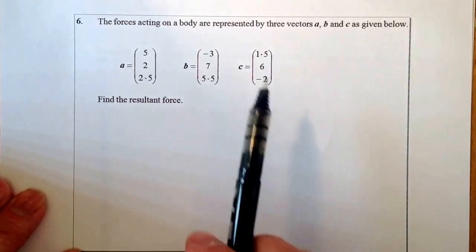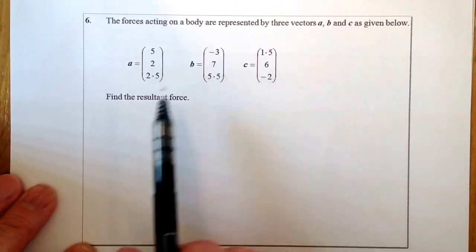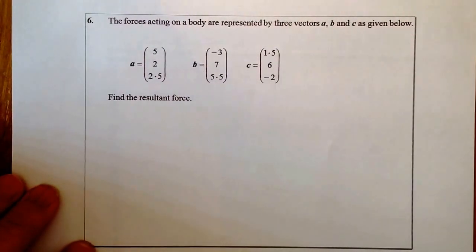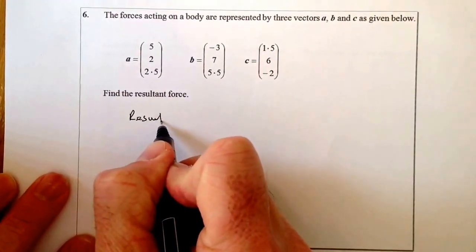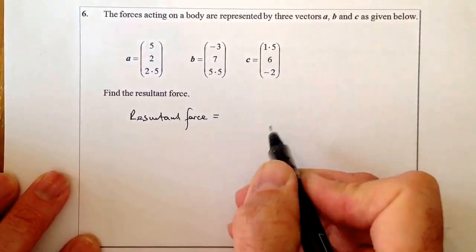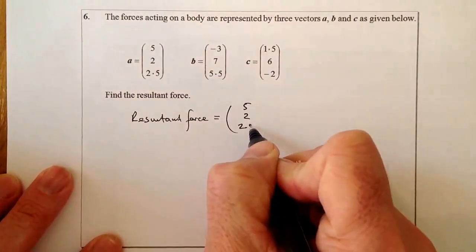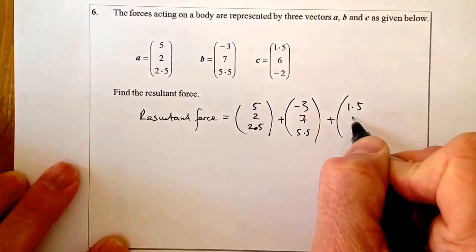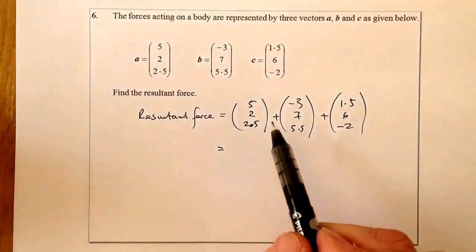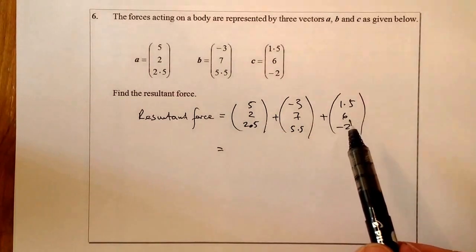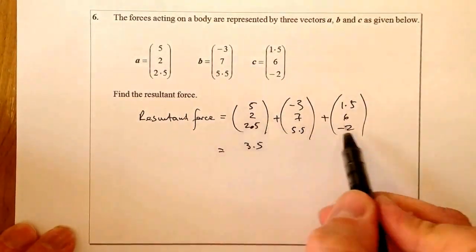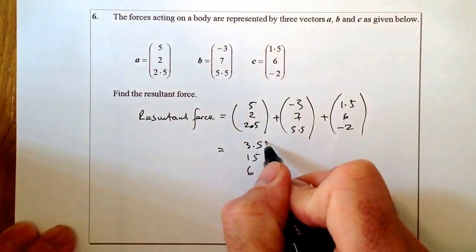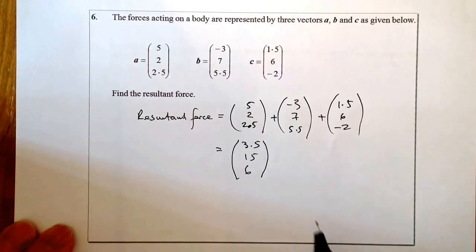Right. The forces acting on a body are represented by 3 vectors a, b and c as given below. Find the resultant force. So the resultant force will just be the addition of all of the forces that are acting upon it. So let's go ahead and do the addition. So what I'll do is just say is the resultant force is going to be equal to. And what we'll go for is 5, 2, 2.5. Plus minus 3, 7, 5.5. And plus 1.5, 6 and minus 2. All I'm going to do is just add all of these up as we go along the way. And what we should get there is we should have 3.5 on the top. Let's see the 2 and the 7 is 9 and the 6 is 15. And finally on the bottom what we're looking at is that's going to be 6. Put it into component form like that there. And that's the question complete. That's the resultant force.